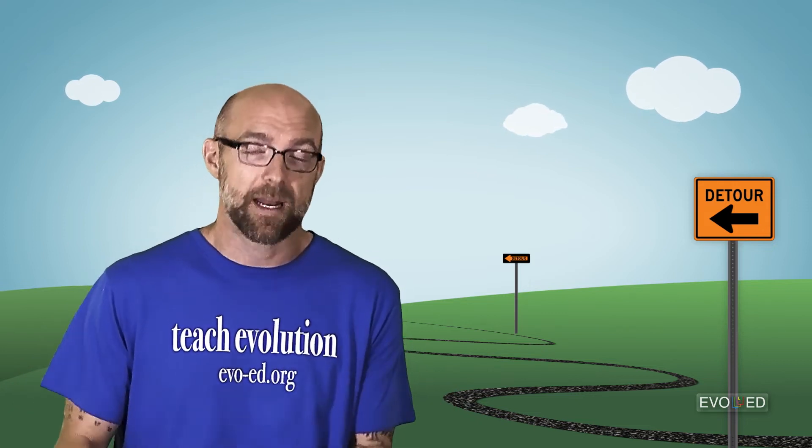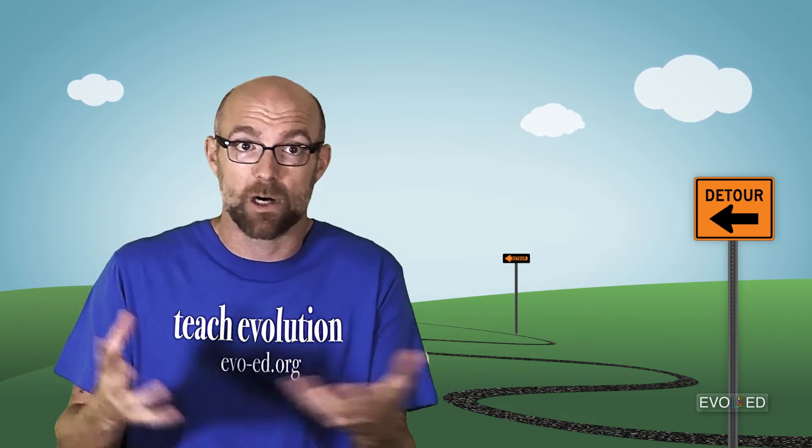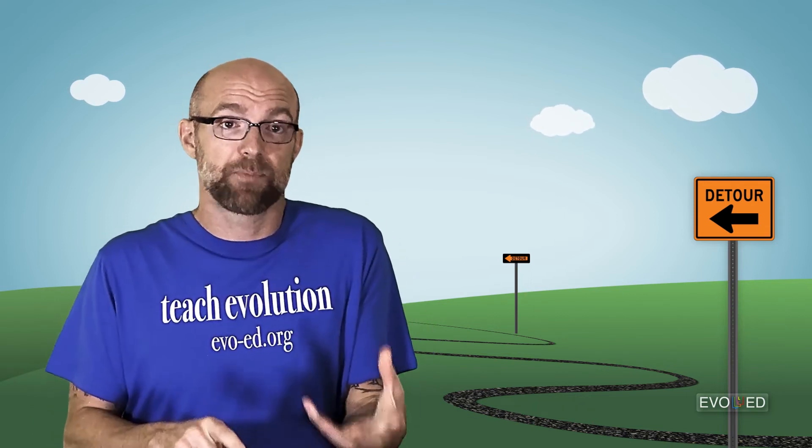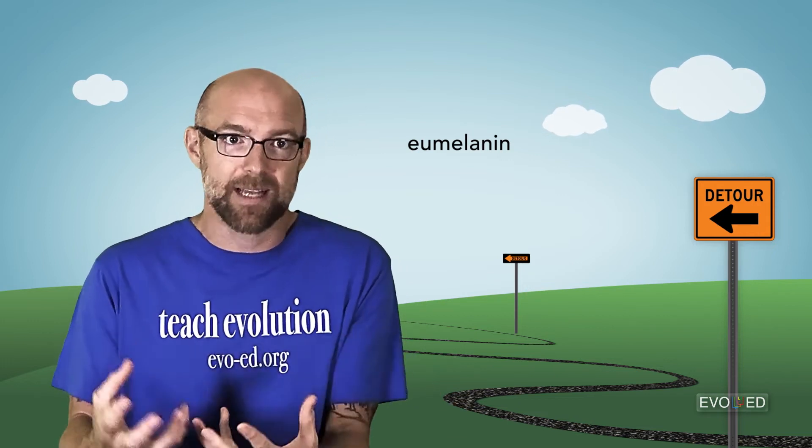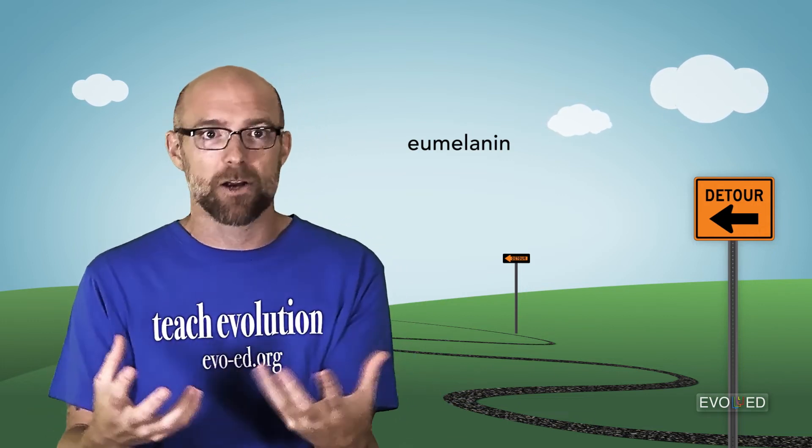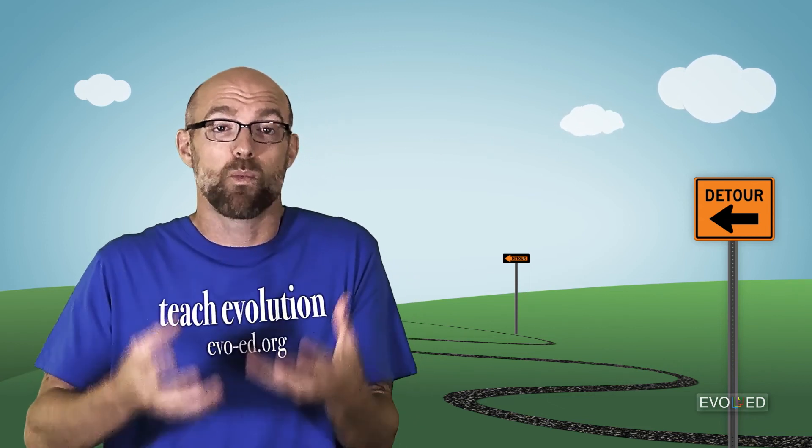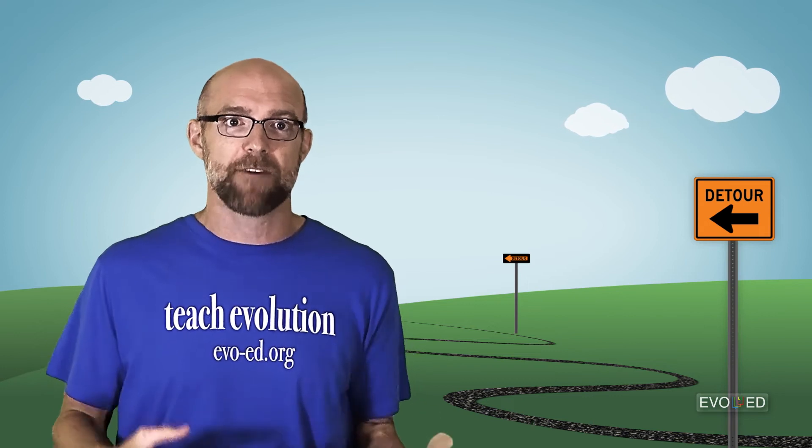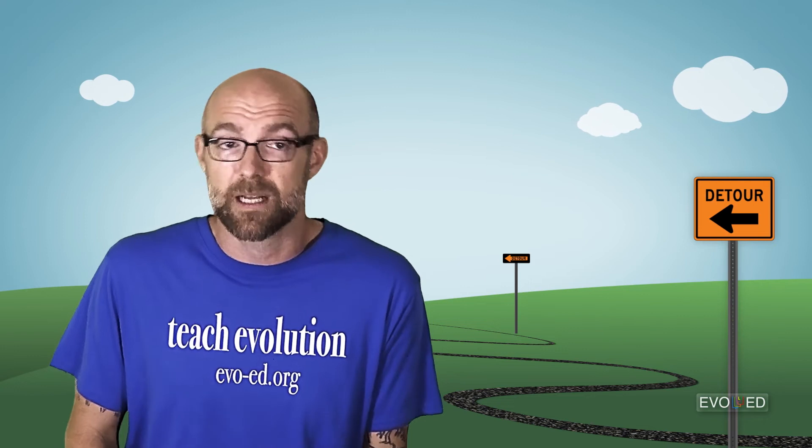Mice have 20-some-thousand genes, and this is important. Not all 20,000 genes are being used in every cell type all the time. The genes that produce the proteins that manufacture the pigment eumelanin, they're not being transcribed and translated in every body part and organ within the mouse, and this is true of a lot of genes. It would be a waste of cellular resources to manufacture proteins that aren't used for the functioning of a particular cell type.